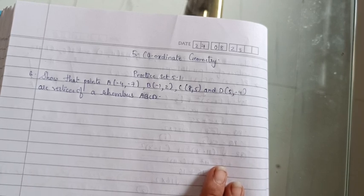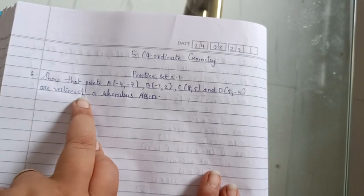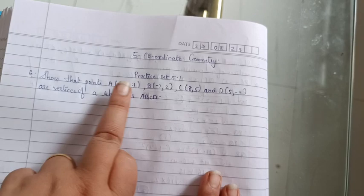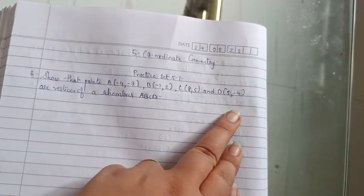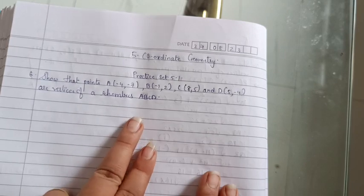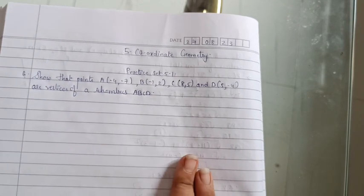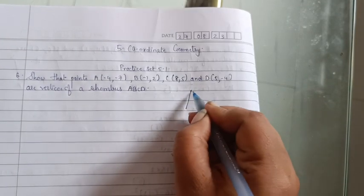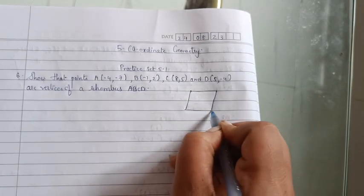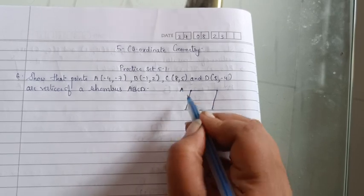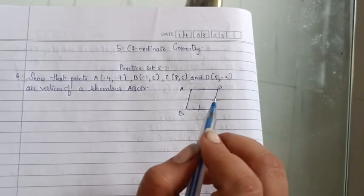We have completed all the questions. Now we are going to start from question 6: Show that the points A(-4, -7), B(-1, 2), C(8, 5) and D(5, -4) are the vertices of a rhombus ABCD. A rhombus means all sides are congruent, so the measurements of all sides must be the same. We have been given distance formulas to solve this.